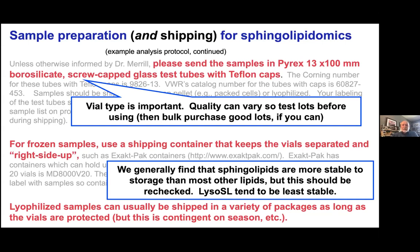Frozen samples for sphingolipids are often pretty stable, so we're in much better shape than one generally is for other lipidomics classes. Even lyophilized samples are often easy to keep for reasonable amounts of time. But that comes with the caveat that it depends on which specific category of molecules you're looking at — sphingoid bases, for example, are much more labile because of the reactivity of the amino group, compared to something relatively inert like a glucosyl ceramide.